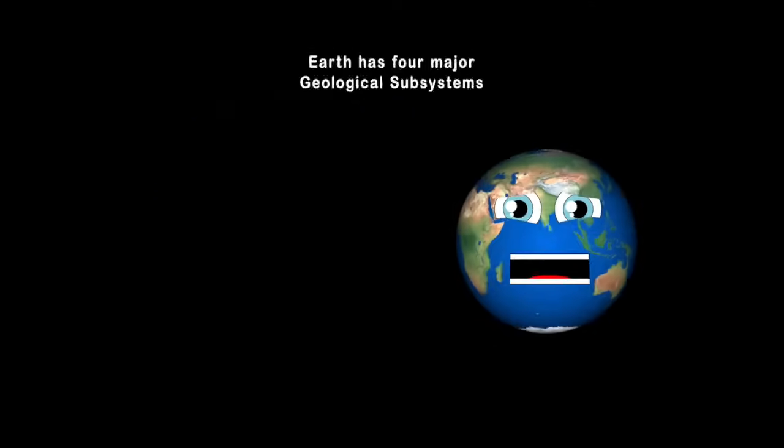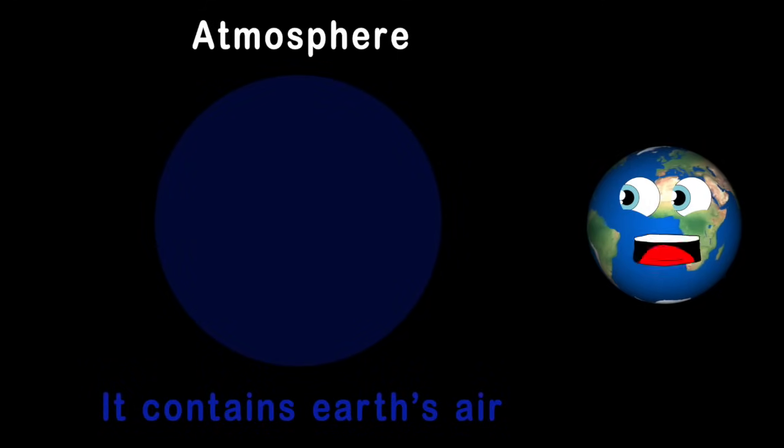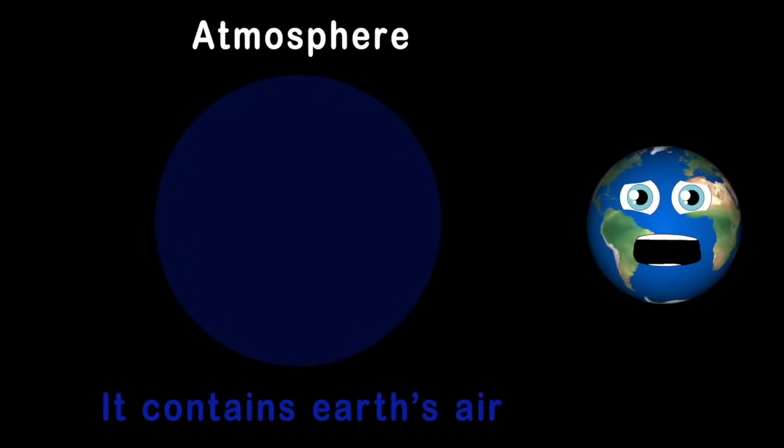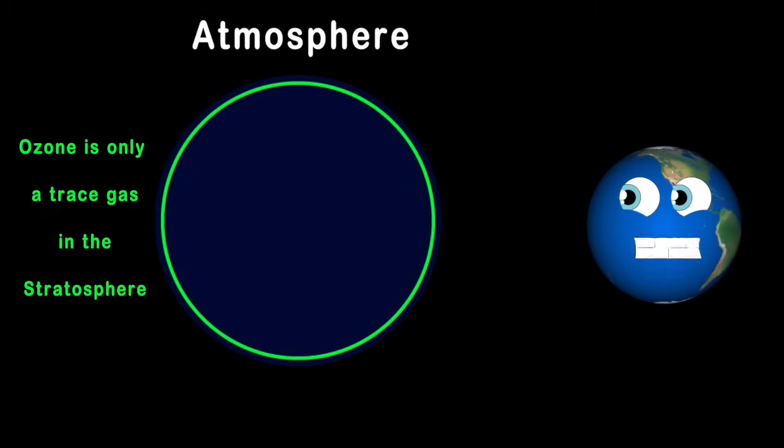I hope you learn and listen. The atmosphere's the next sphere that we will look at, it contains Earth's air and protects all of us, now how about that? The atmosphere's made up of five layers, now you know, one layer blocks radiation from the sun, it's called the ozone.